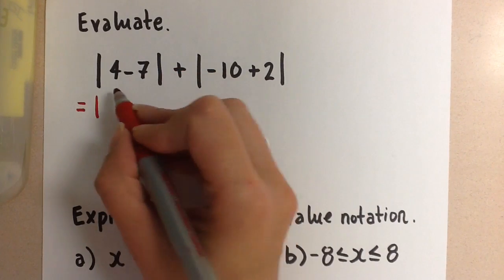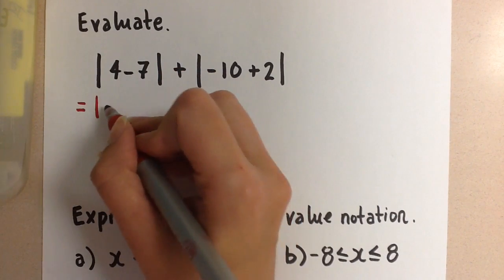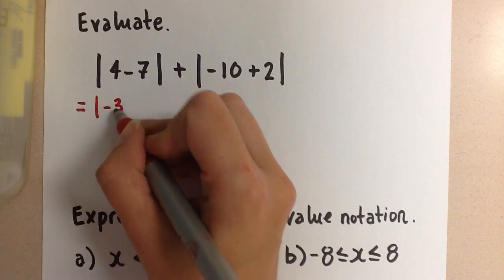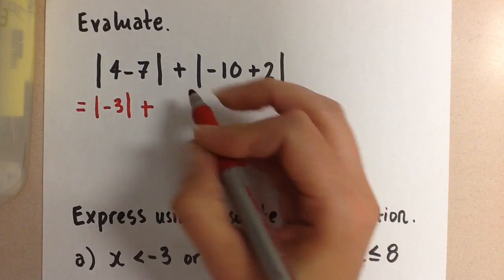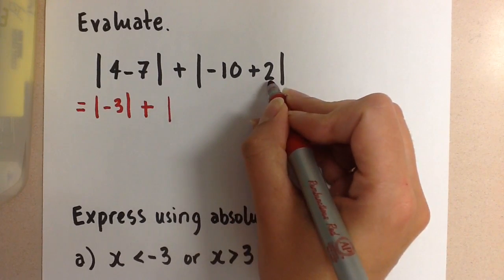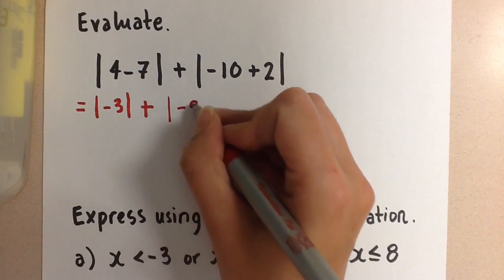So this is going to become the absolute value of 4 minus 7, which is negative 3, plus the absolute value of negative 10 plus 2, which is negative 8.